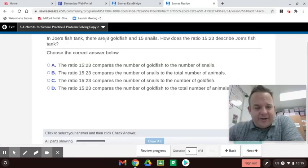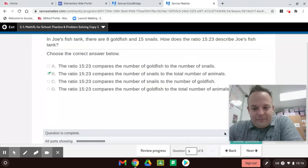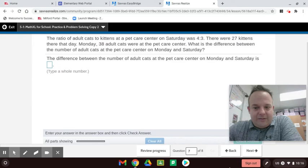All right. In Joe's fish tank, shout out to Joe and Dan, there are 8 goldfish and 15 snails. How does the ratio 15 to 23 describe Joe's fish tank? So what is 8 plus 15? This is a part to a whole, so it's describing snails. You see, 15 snails to the total. So 15 to 23 describes snails to the total. Yeah, that's what it does.